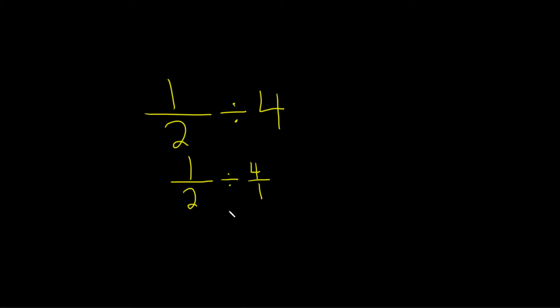Okay, now let's get rid of the division sign. So it's 1 over 2, and then you change the division to a multiplication, and then you find the reciprocal of this, which means that you just flip it. So it's 1 over 4.